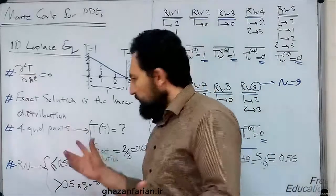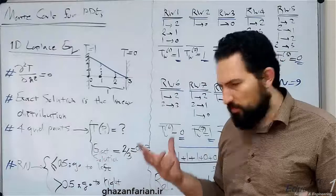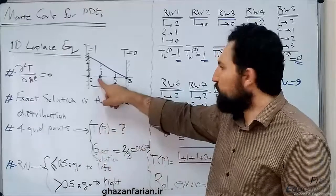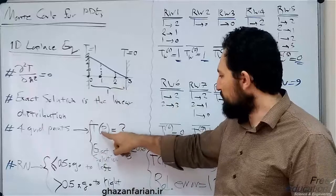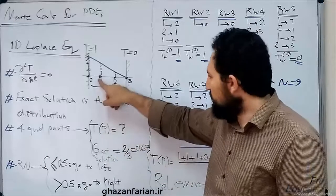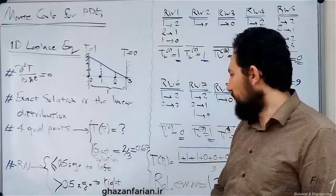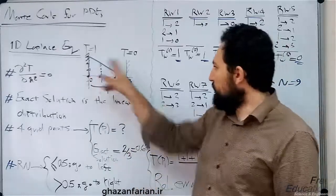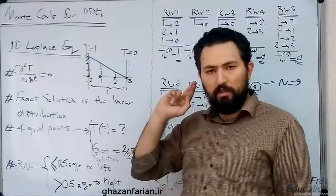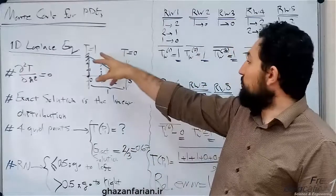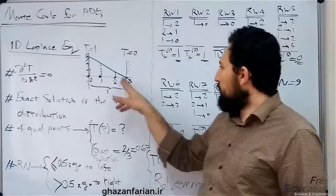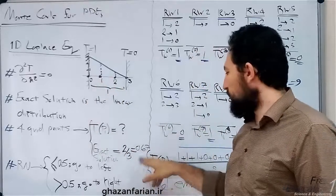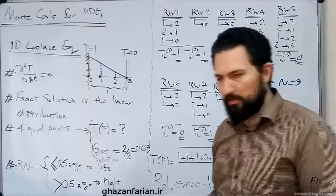This is the first step: the discretization of the equation. For simplicity, I have selected 4 grid points — two on walls with given temperatures, and two internal nodes. I want to compute the temperature of point P1. The exact solution is 2/3, approximately 0.67, because this is a linear distribution starting from 0 and ending at T equals 1.